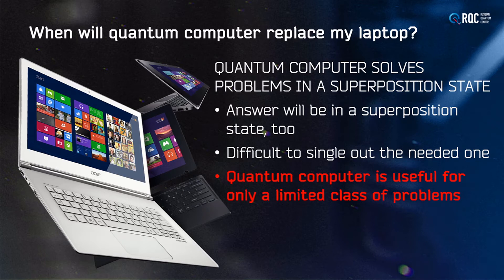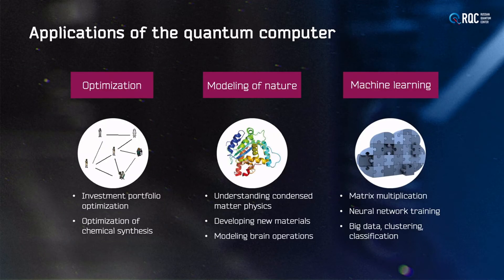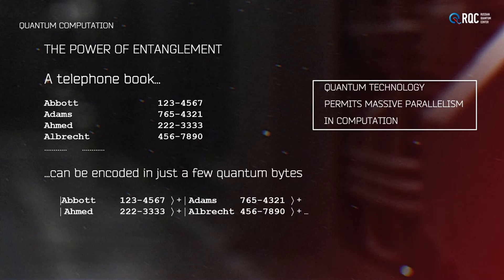The quantum computer is able to solve multiple problems in a superposition state, but that means the answer will also be in a superposition state. At a given time, you need just one answer to one particular problem. Going back to our phone book, you don't need a superposition of all names and numbers — you need only one number corresponding to a given name. How to single out from this entangled mess the particular answer you want is non-trivial.